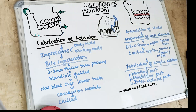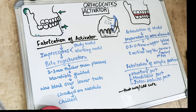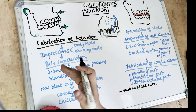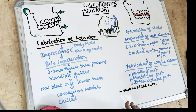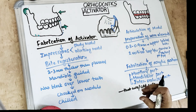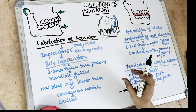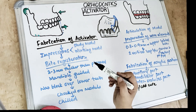Now it is time to fabricate the activator. Upper and lower impressions are taken — one set for the study model and the other for the working model and bite registration. We calculate the amount of vertical as well as the anterior advancement needed. Based on that, a wax bite is made: the wax should be 2 to 3 millimeters thicker than the planned vertical height increase.